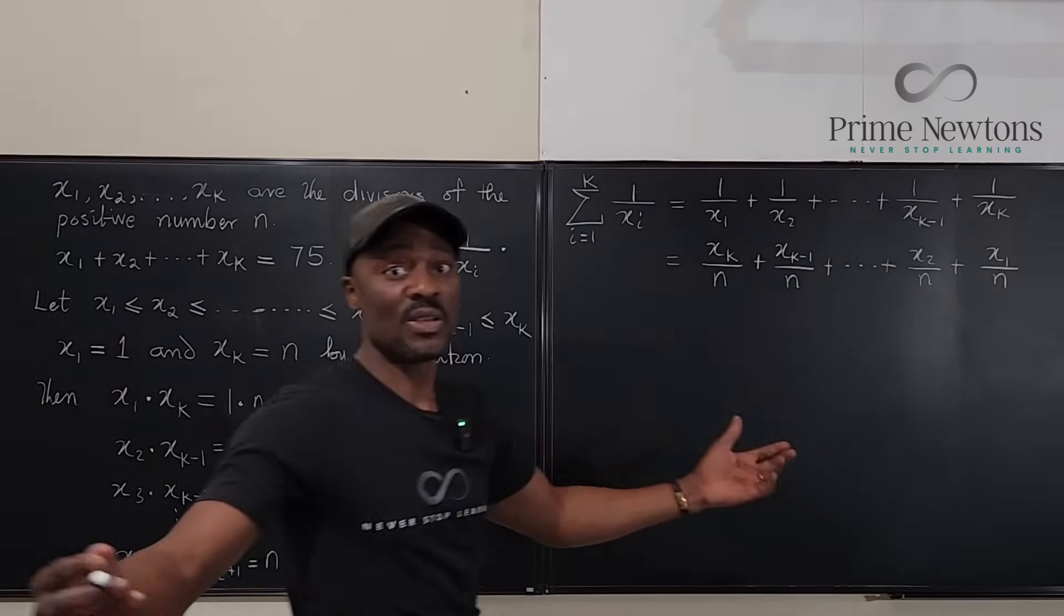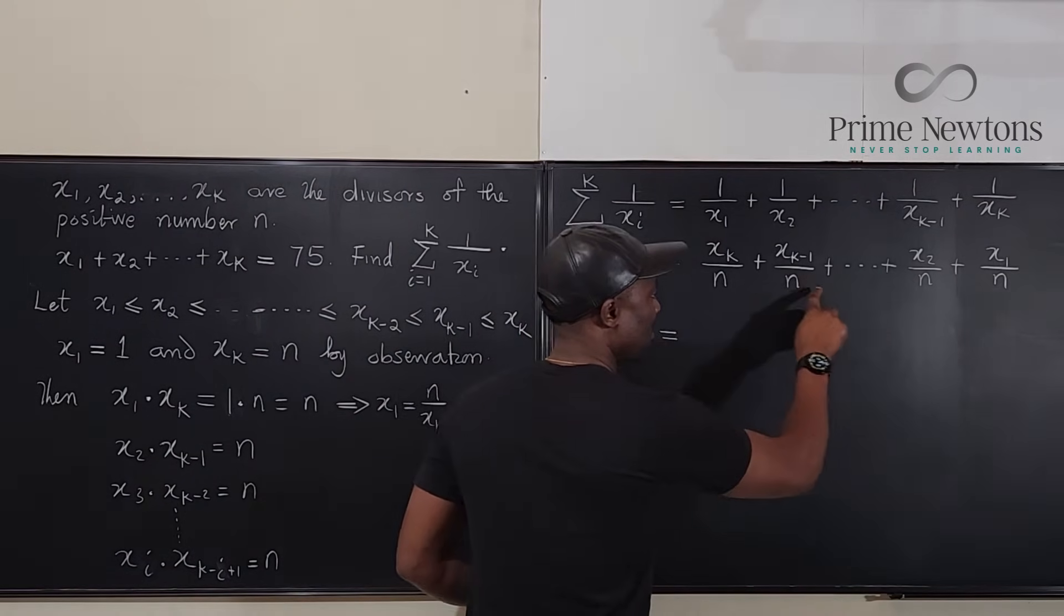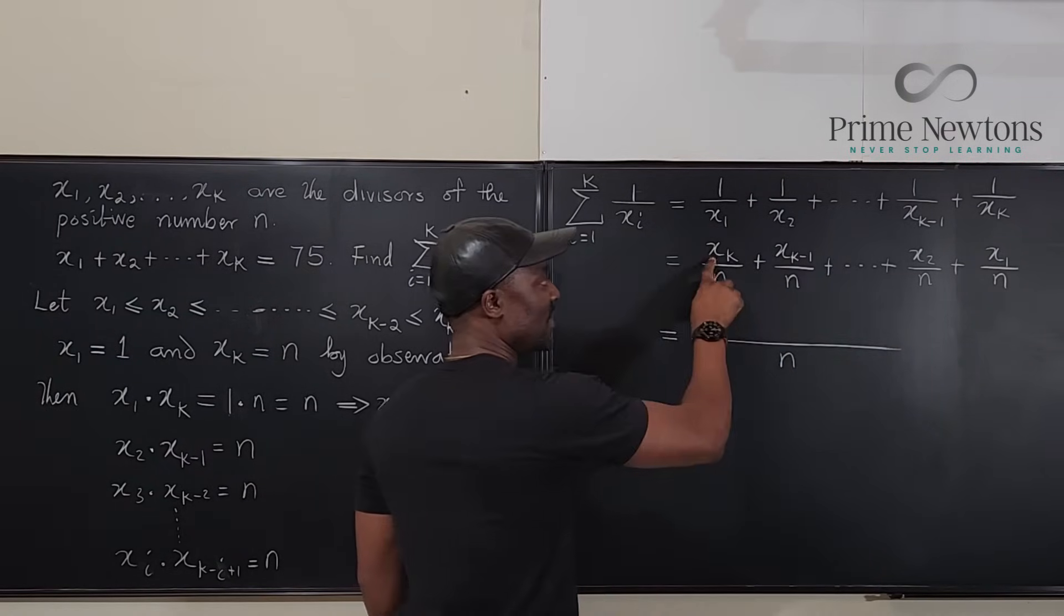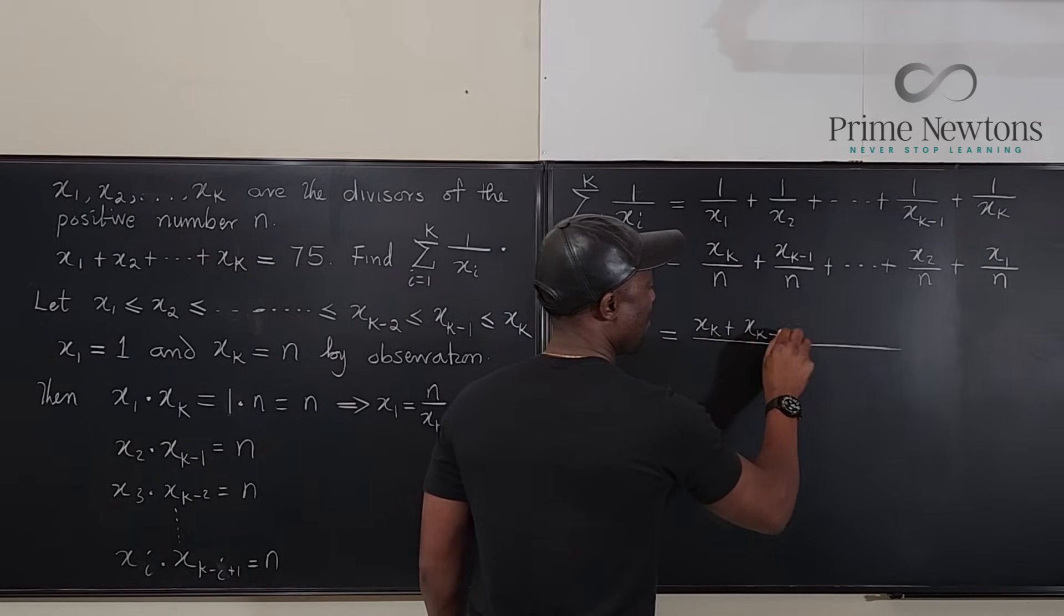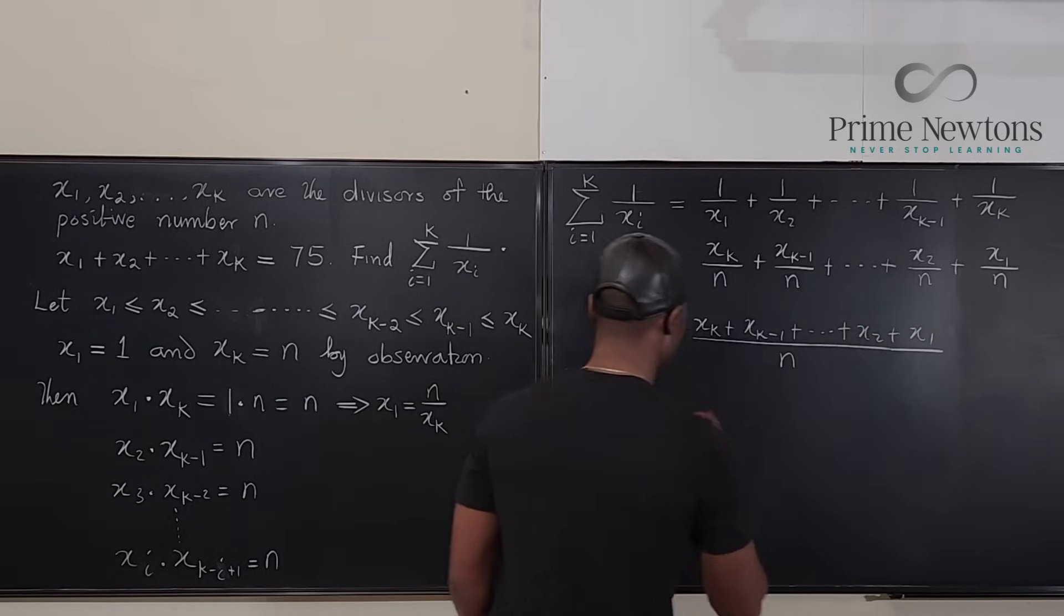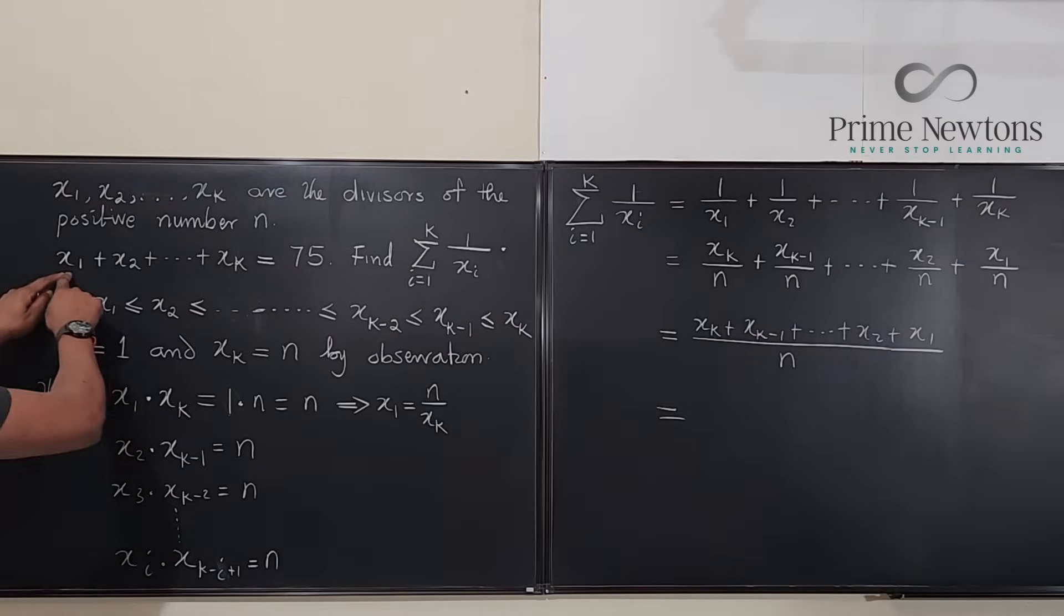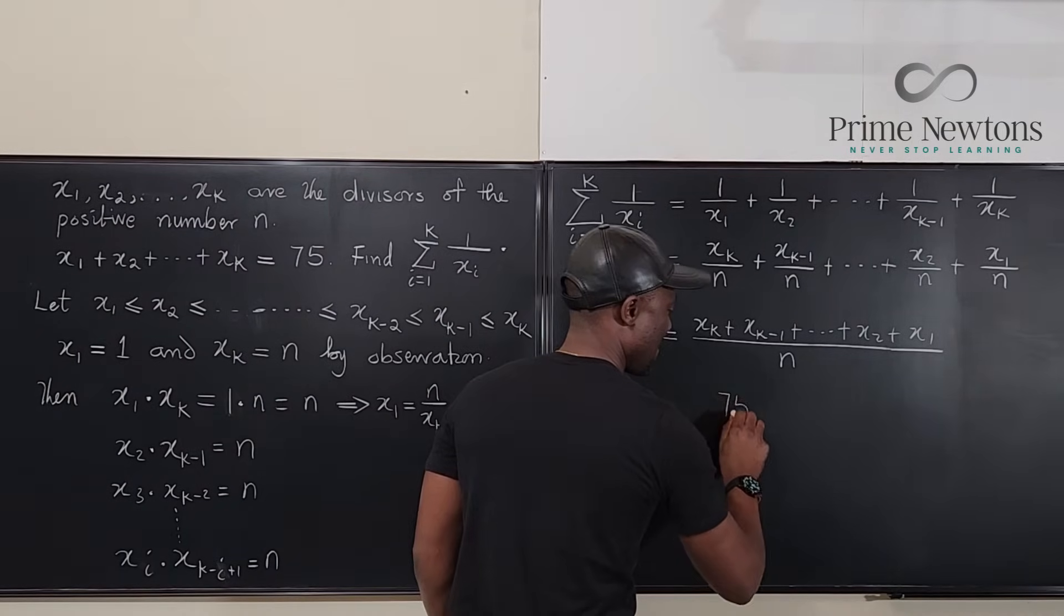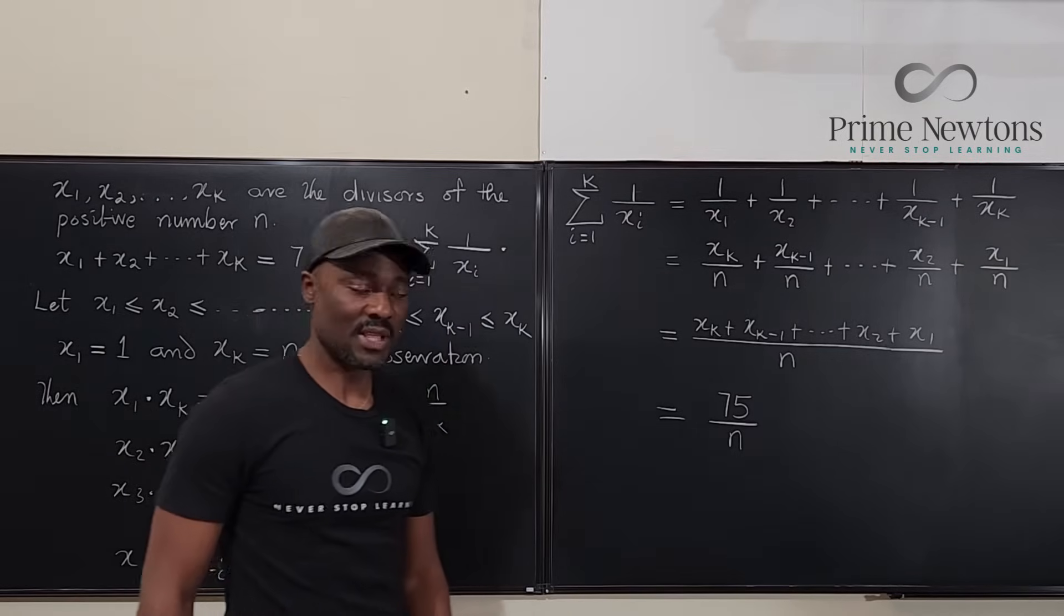Okay, here, the denominator for all this sum is n. So basically what we have is n. And you can just add up all of the sum, which is going to be x sub k plus x sub k minus 1 plus x sub 2 plus x sub 1. So what do you have? Well, we know this sum because they gave us. It was 75 in this case. And what is n? We don't know. They never gave us n. So this is our answer. It's 75 over n.